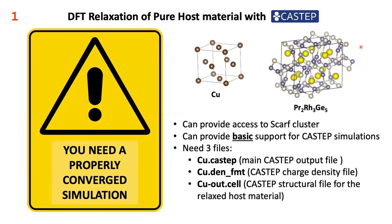The first step is the relaxation of the pure host material using the CASTEP code. You can try not relaxing the sample, just running a single point calculation to see which muon stopping site you find and whether that helps with the interpretation of the muon experiment. A geometry relaxation is one of the easiest calculations you can run using a density functional theory code. We in the Scientific Computing Department can give users of the muon source access to the SCARF cluster and basic support for CASTEP.